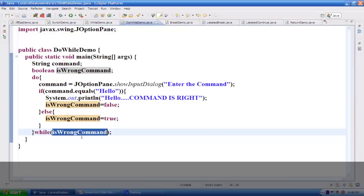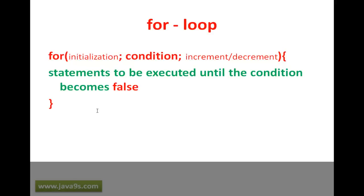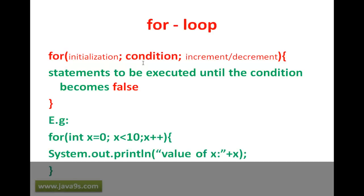Next we'll look at the for loop, which is mostly used for iteration using counters. It has three parts: the first is the initialization part where you declare and initialize variables; the second is the condition part, where only when this condition is true does control enter the for loop; the third is the increment or decrement part. The initialization and increment/decrement parts are optional, but the condition is always mandatory. When the condition is true, the control comes inside the for loop.